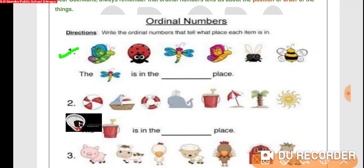Look at the first part. The butterfly is in the dash place. We have to find the position of the butterfly in the given series. Let us find it: first, second, third. The butterfly is in the third place, so we will write 3rd, third.